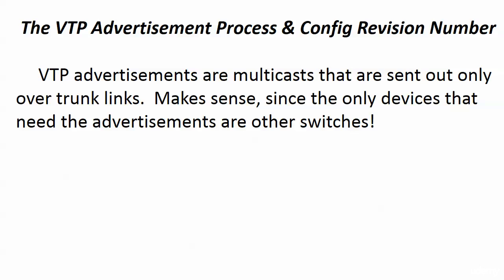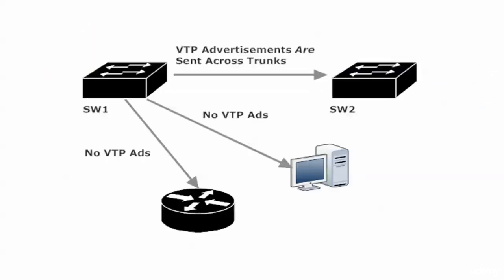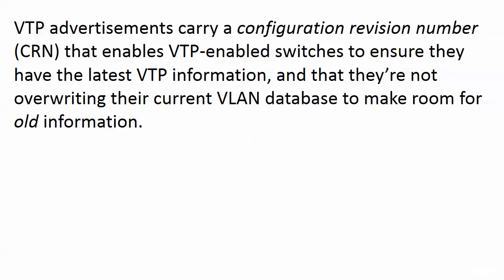They're multicasts going to a group, and that group really is the switches that a given switch is trunking with. Think about the name: VLAN Trunking Protocol. Who needs those advertisements? A device with VLANs that is trunking. The only devices that need the advertisements are switches on the other end of trunks. Printers don't need them, routers don't need them, hosts don't need them, servers don't need them — so we're not going to send them. VTP ads only go across trunks.